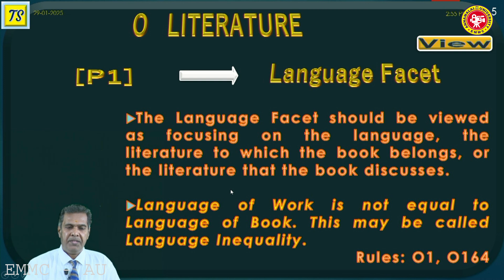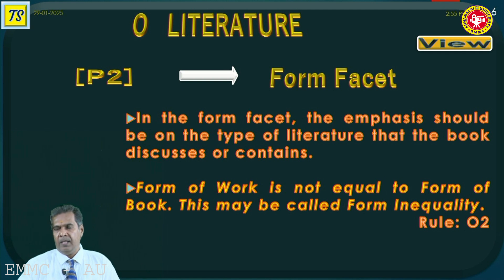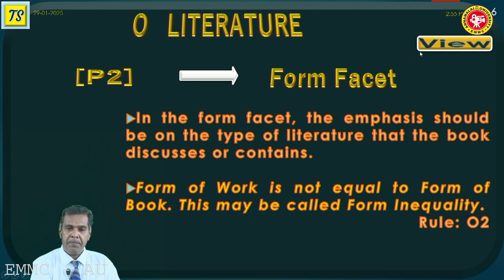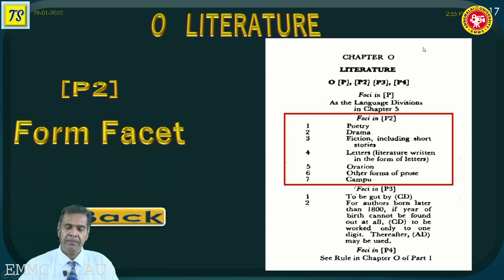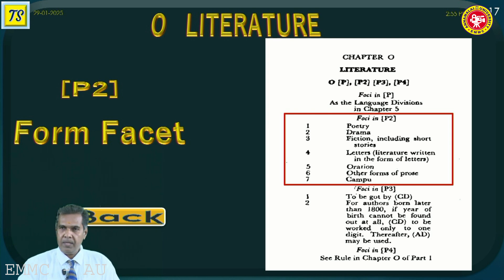The next facet is the form facet. P2 covers the form facet. The emphasis should be on the type of literature that the book discusses or contains. The form inequality must be recollected here — form of work is not equal to form of book. Keep this in mind. The highlighted part shows the P2 facet. Here you can find various forms categorized from 1 to 7: poetry, drama, fiction, letters, oration, etc. You can find the notations for the form facet here.